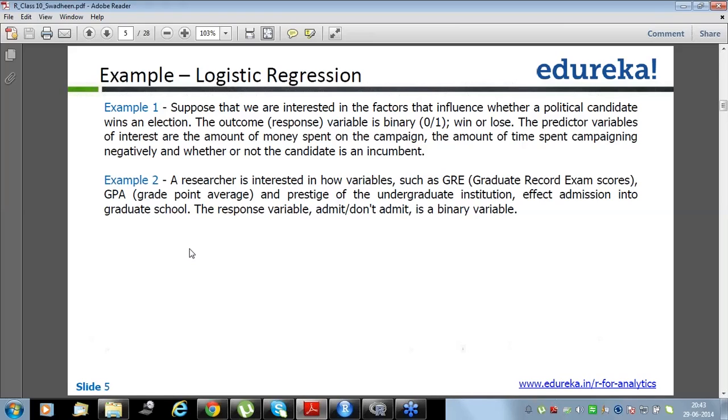These are the explanatory variables or what we call independent variables. Example two: a researcher is interested in how variables such as GRE (Graduate Record Exam) score, grade point average, and prestige of the undergraduate institution affect admission into graduate school. Here the admission is converted into two category problems like admit or do not admit, so it's again a binary variable.